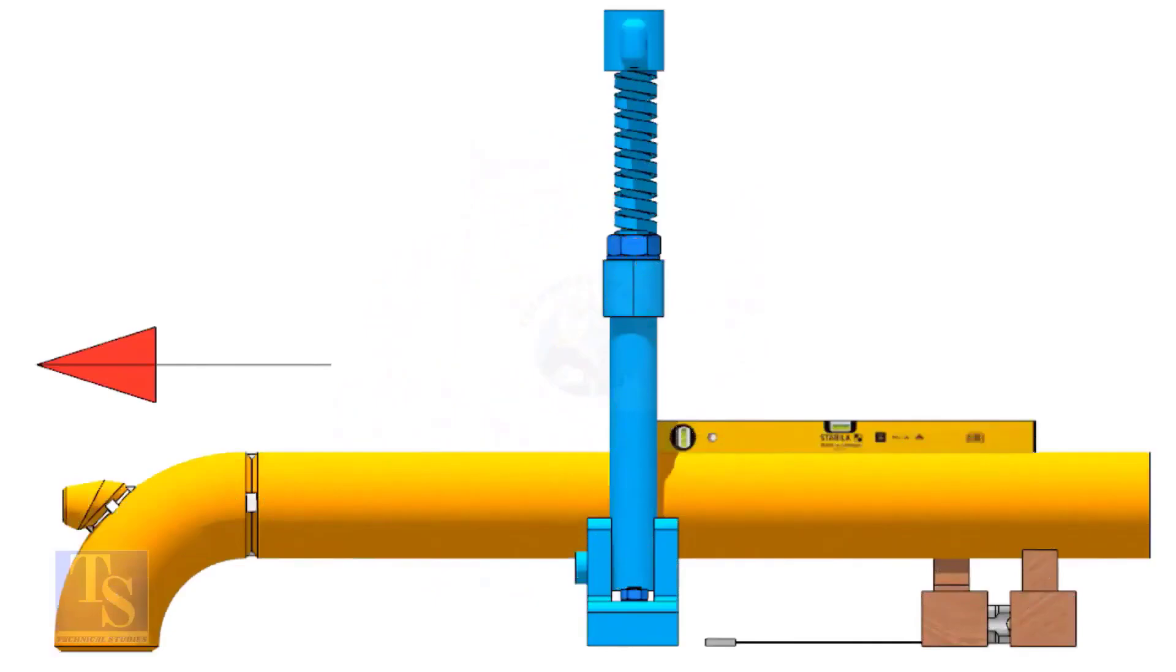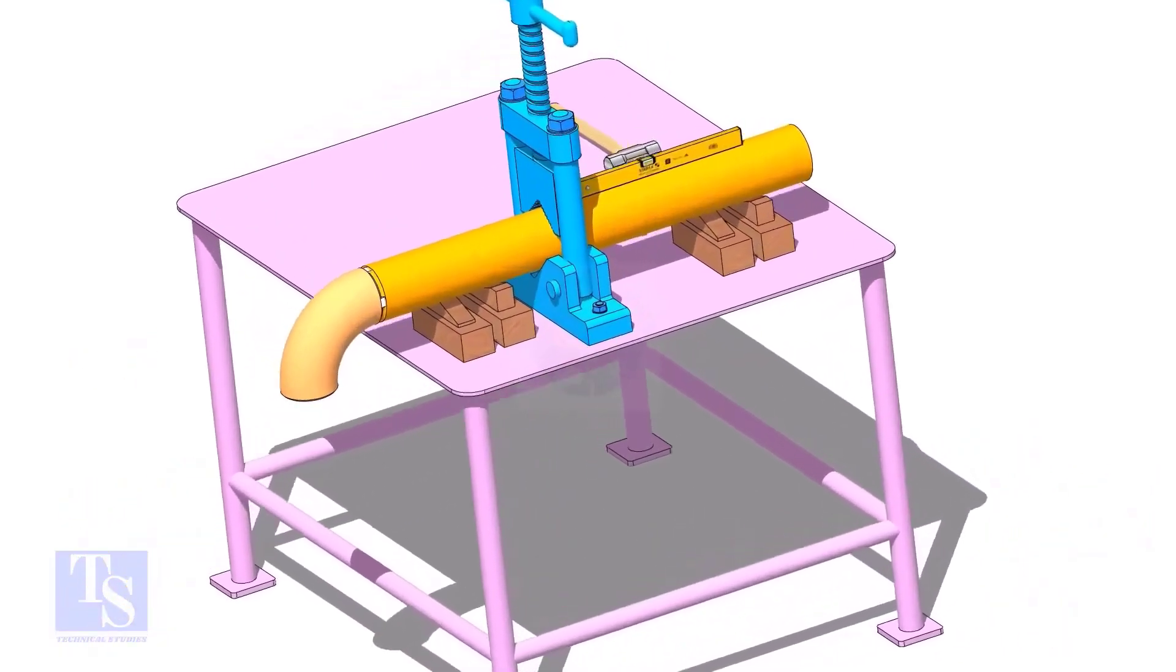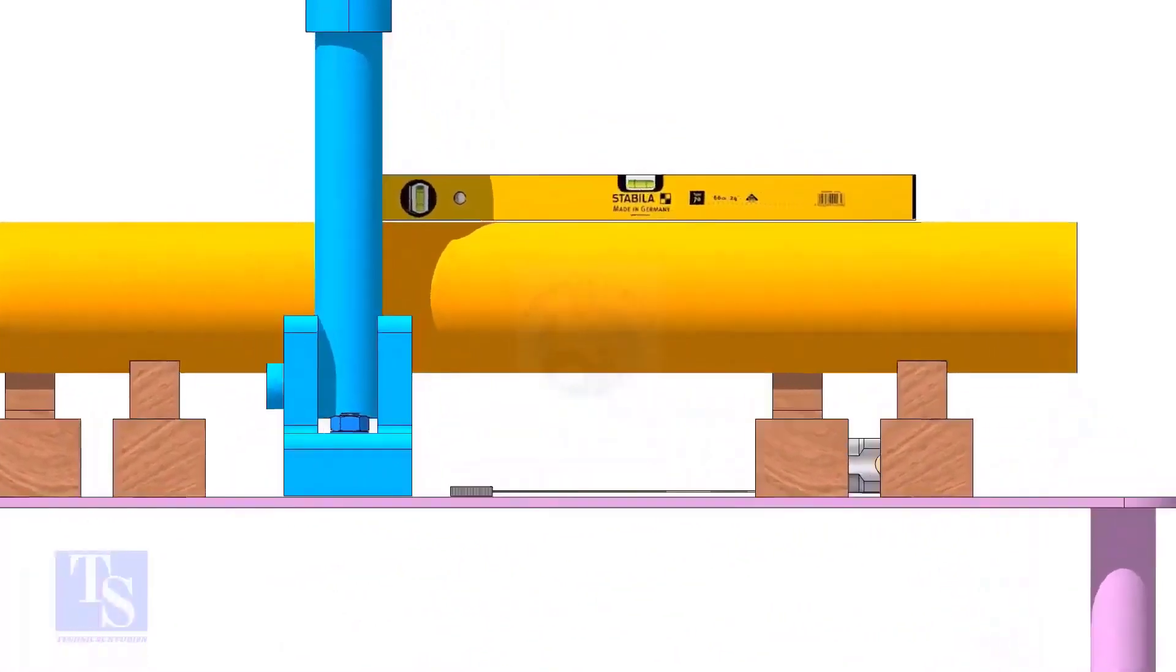I had seen guys making mistakes when they fix the direction of the elbow. Please be careful. Level the pipe and the elbow face. If necessary, put packings below the pipe.